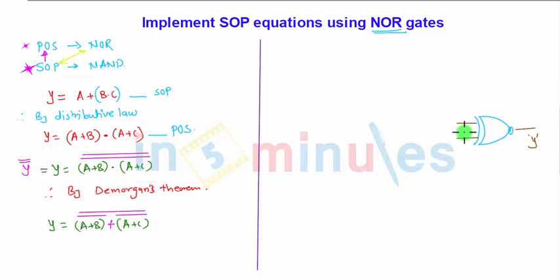So one of the inputs, this input should be (A plus B) complement and this should be (A plus C) complement. The final answer will be same. To obtain these equations again I will be requiring NOR gates and for these NOR gates the input must be A, B, A and C.